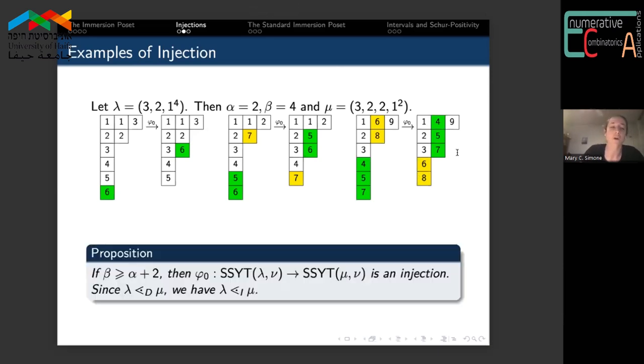So in our proposition, we need to ask that the number of copies of the repeated part is greater than or equal to the number of parts that came before the repeated part plus two. Once we have this, we do have an injection between these sets of semi-standard Young tableaux. As a corollary, then λ is covered by μ in the immersion poset.